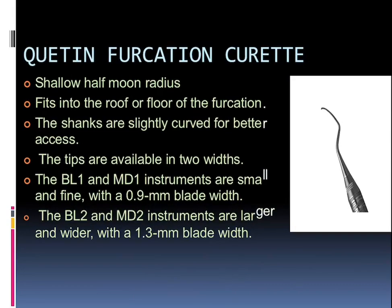Talking about the QU18 furcation curette: it is a shallow half-moon radius curette which fits into the roof and floor of the furcation. The shanks are slightly curved for better access. The tips are available in two widths: the BL1 and MD1 instruments are smaller and fine with a 0.9 mm blade width, while the BL2 and MD2 instruments are larger and wider with a 1.3 mm blade width.